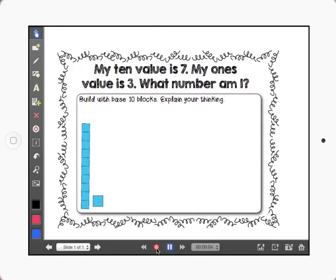The next thing you're going to do is read the problem. The problem says my 10 value is 7, my 1's value is 3, what number am I? So I need to build my number with base 10 blocks and remember to explain my thinking throughout. So I need to hear and see what I'm doing.